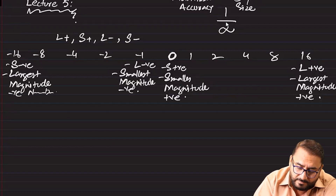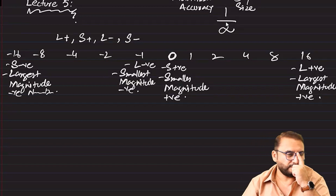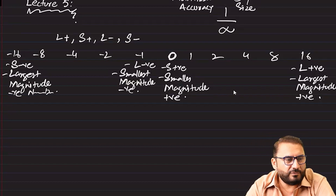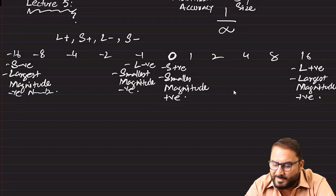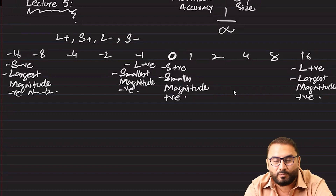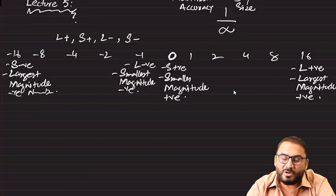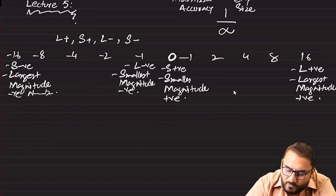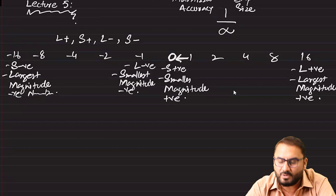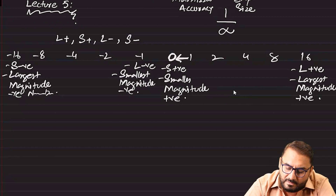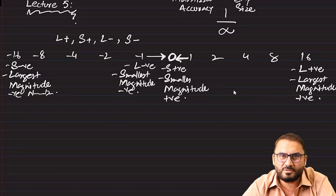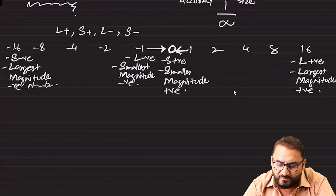We are dealing with real numbers, so the largest positive number might be something like 16-point-something or 8-point-something depending on how many bits are in the mantissa. The smallest positive number is a number less than 1 and closest to zero. Similarly, the largest negative number is greater than -1 and closest to zero. Let's see how this all works.